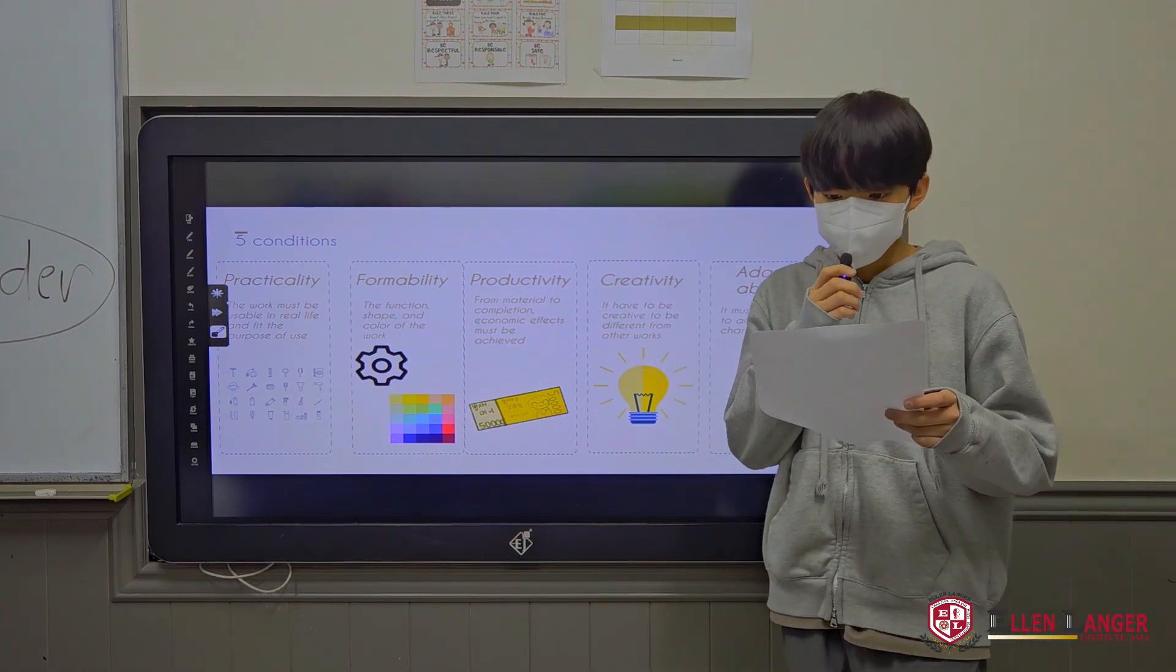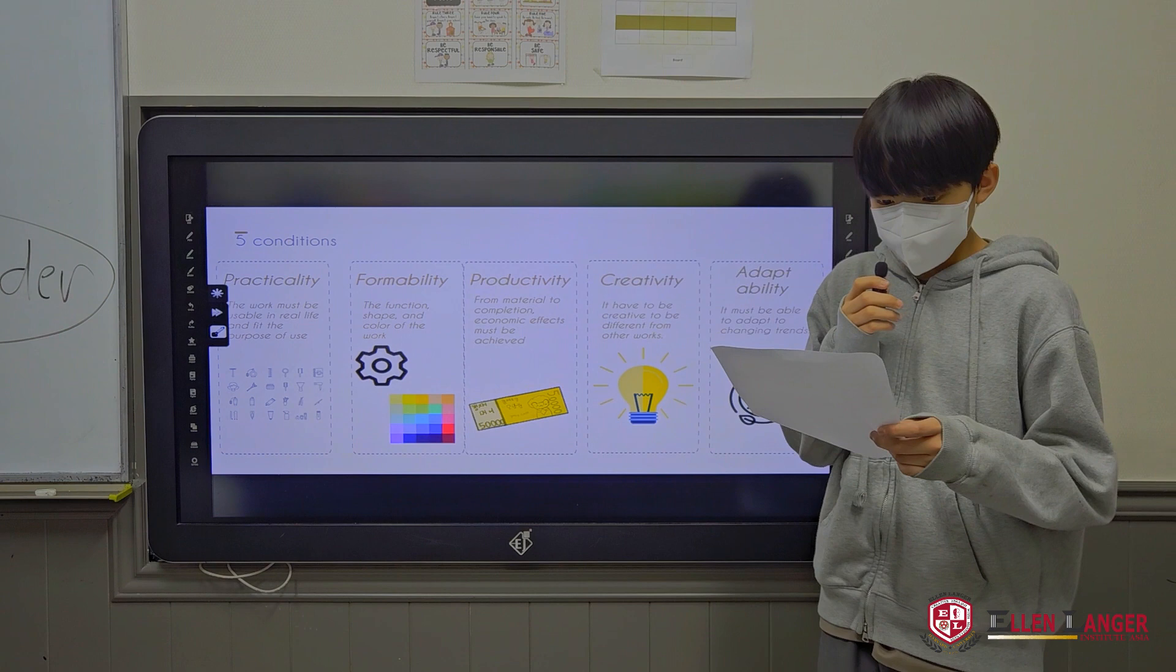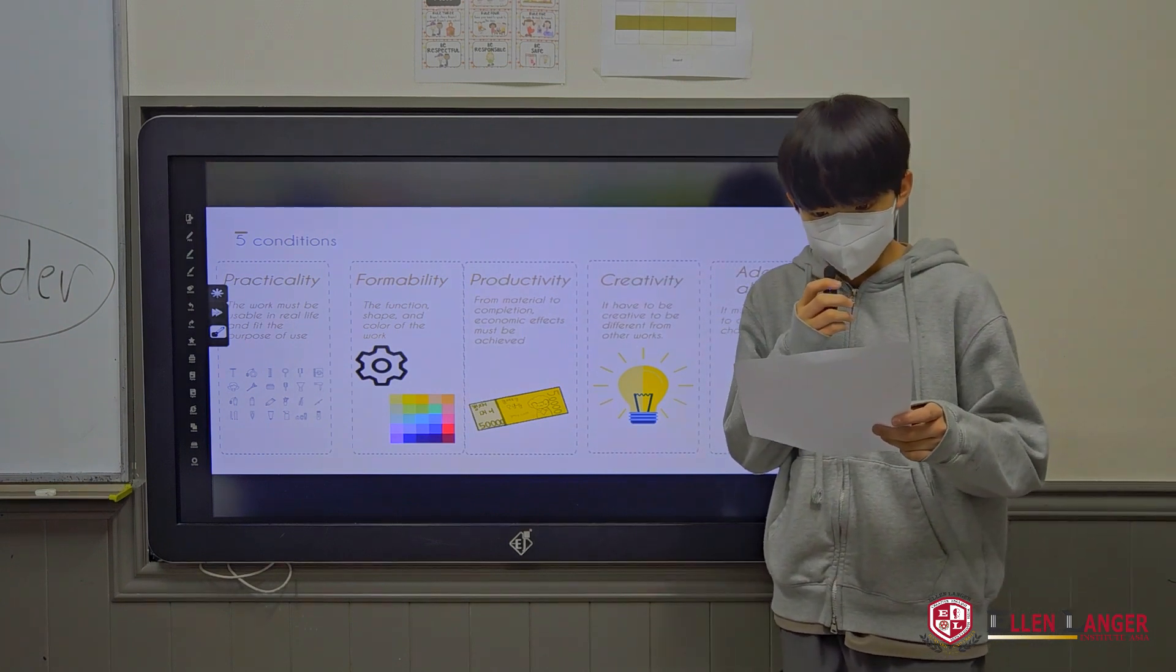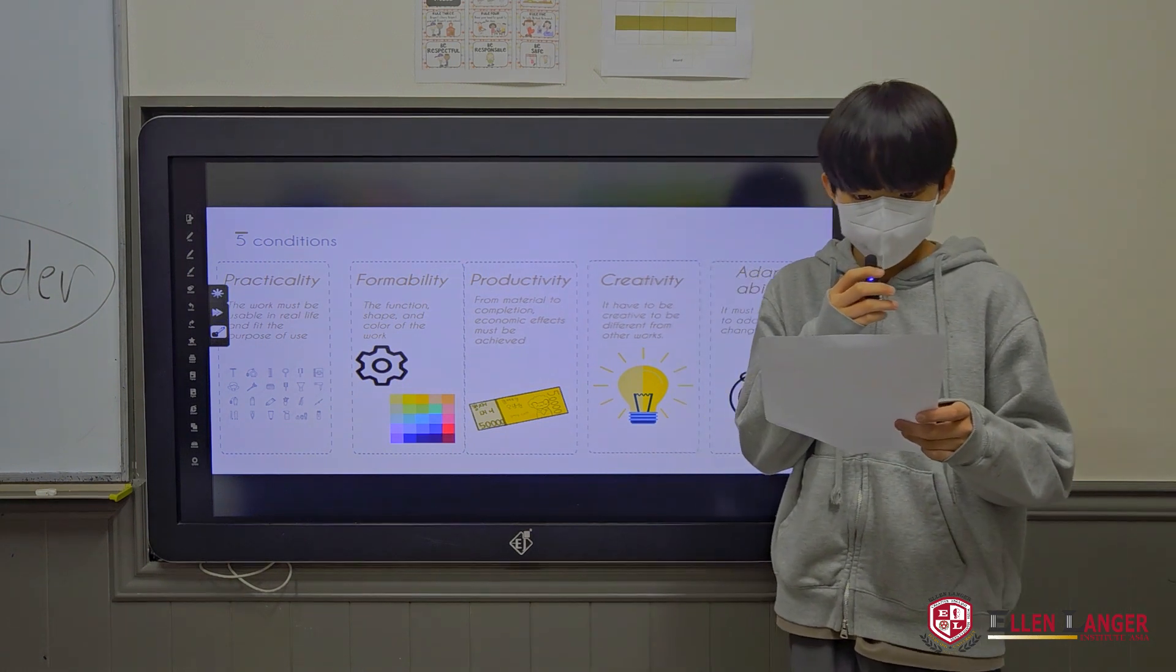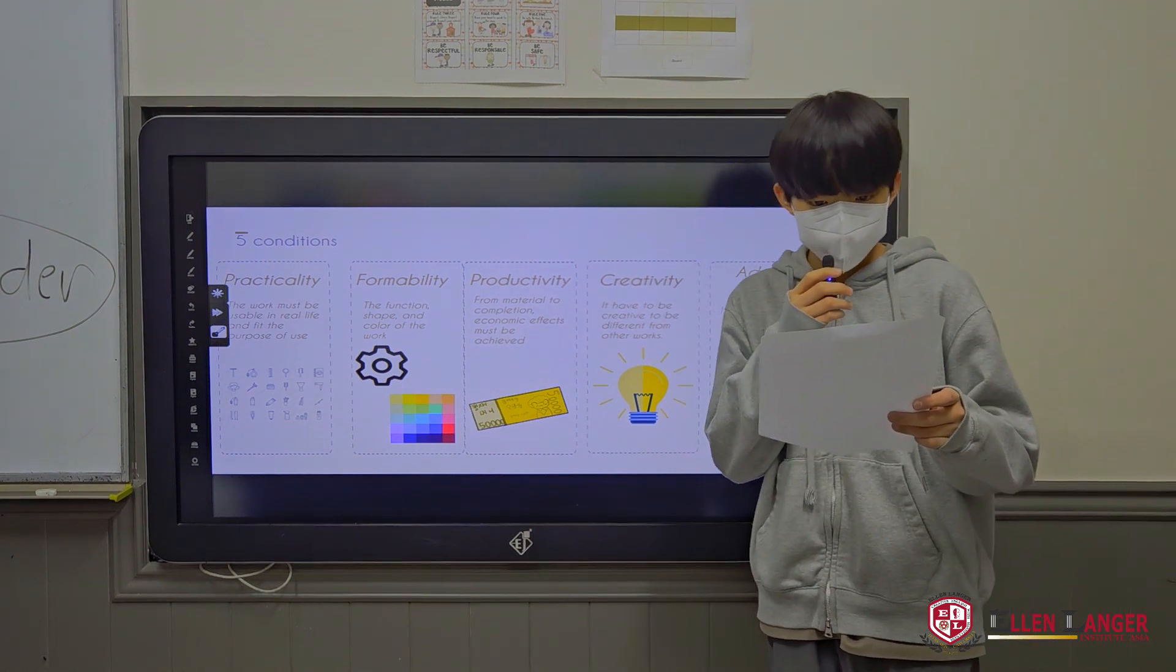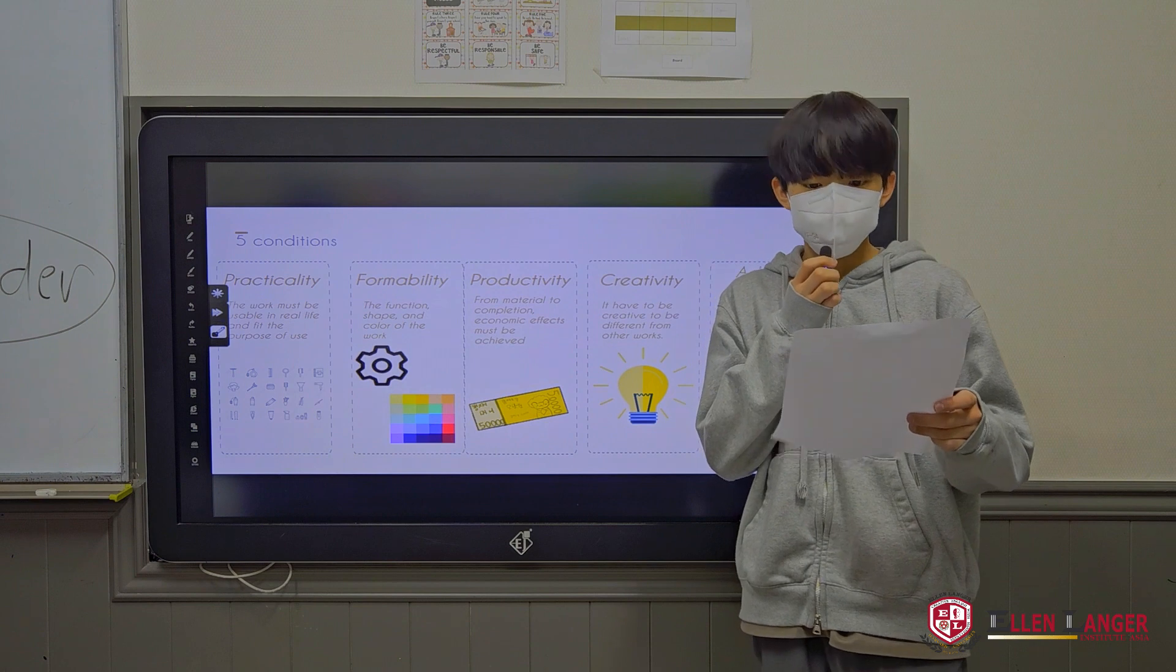Second is formability - the function, shape, and color of work. Third is productivity. From start to finish, you have to get economic benefit.